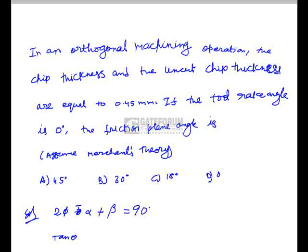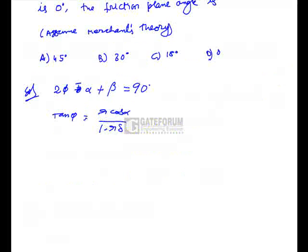The shear angle φ is given by tan φ = r cos α / (1 − r sin α), where r is the ratio of uncut chip thickness to chip thickness, which equals 1, and α = 0. So tan φ = 1, giving φ = 45 degrees. From Merchant's equation with α = 0, we get β = 0 degrees. So the right option is D.